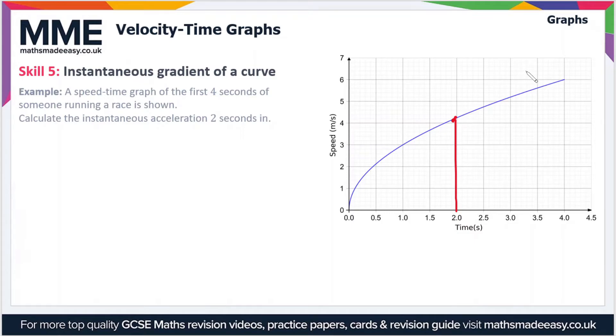Two seconds in, the tangent has the same gradient as the graph at that point. When you draw the tangent to the graph, the idea is to make it as big as possible, because that means when you calculate the gradient of the tangent to get the acceleration, your result will be as accurate as possible.